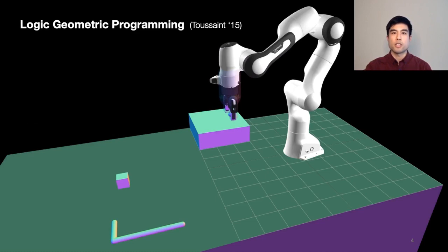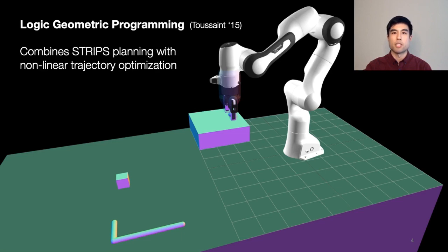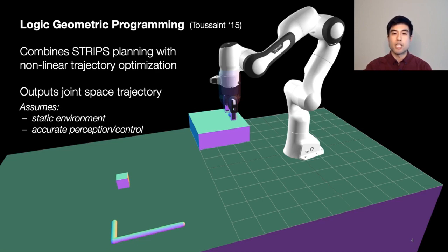Our framework solves the TAMP problem with logic geometric programming, which combines STRIPS planning with nonlinear trajectory optimization. Like most other TAMP methods, logic geometric programming produces joint space trajectories, which are valid only as long as the environment is static and perception and control are highly accurate.